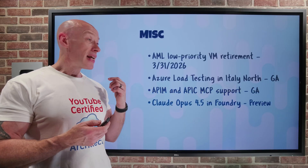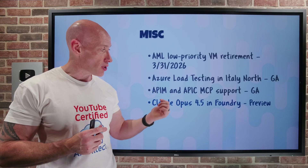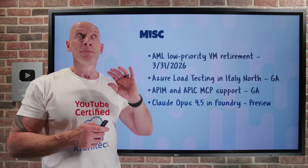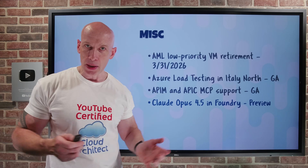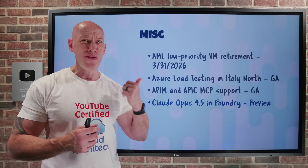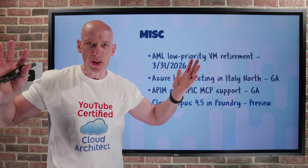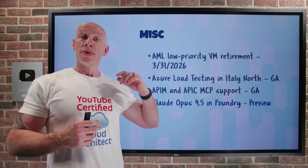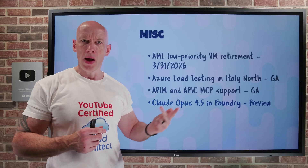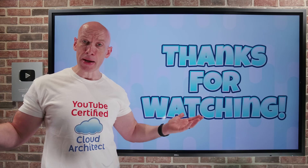At Ignite there were a bunch of announcements about Anthropic Claude models. Claude Opus 4.5 is now available in preview in Foundry — today only as the global standard deployment type. Opus 4.5 is really good for coding, refactoring of code, agents, computer use, deep research, and a whole bunch of other things. You can use it in the Foundry Playground, Azure Foundry, GitHub Copilot, and Microsoft Copilot Studio.